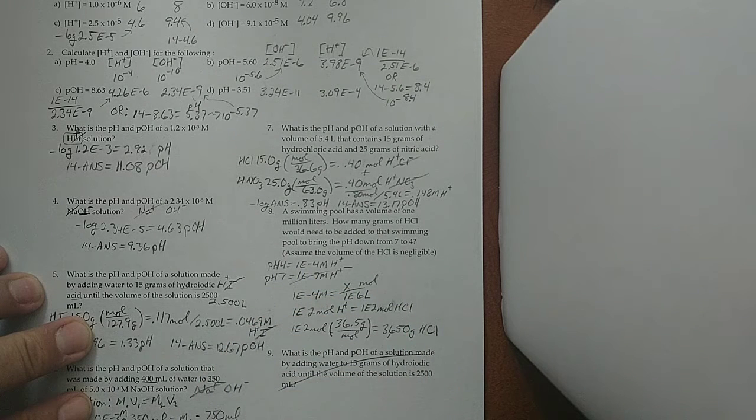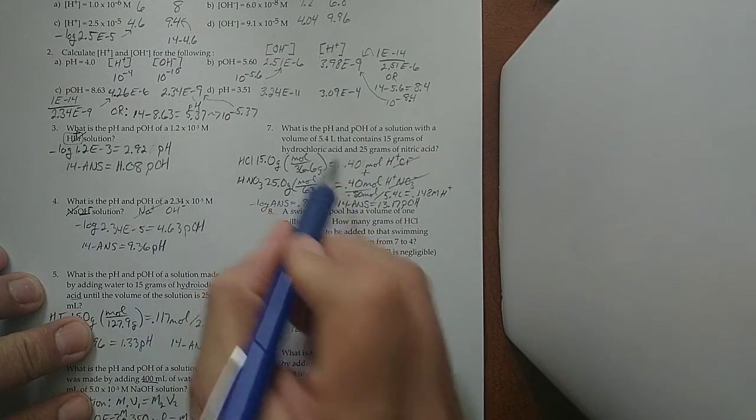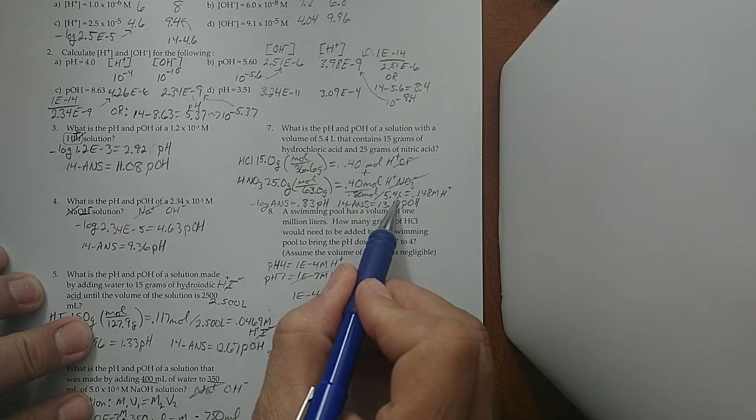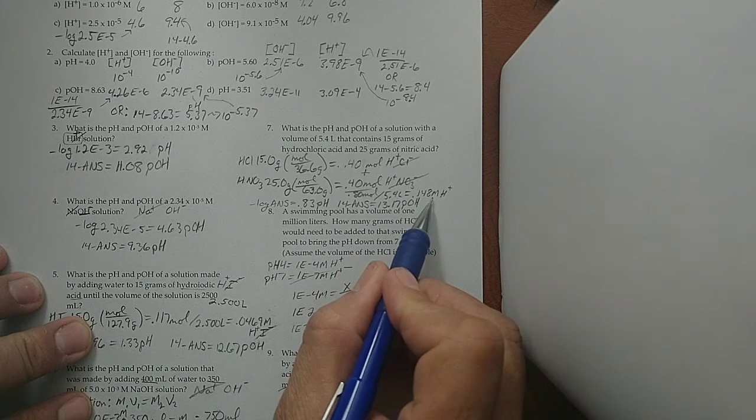But for pH purposes, we need not moles, but molarity, which is moles per liter. Well, they told me the liters, didn't they? So, I'll take the moles that I added up, divide it by the liters of the solution, and that will give me molarity.